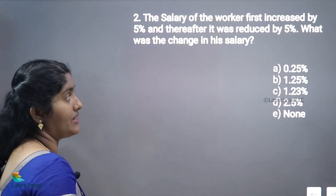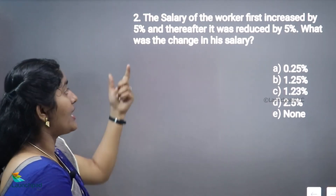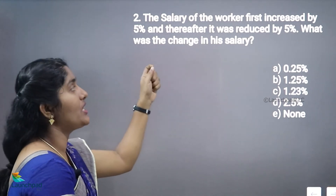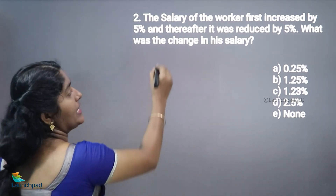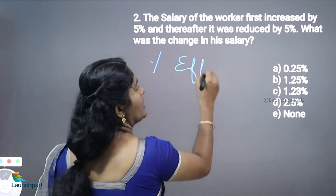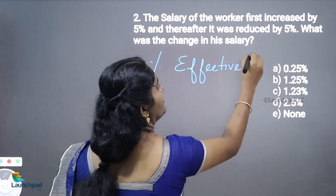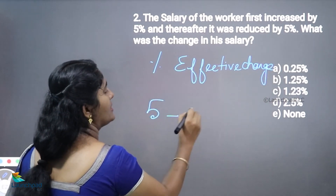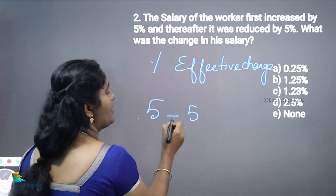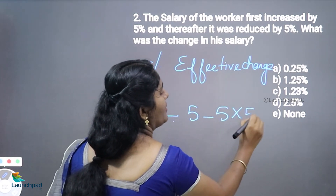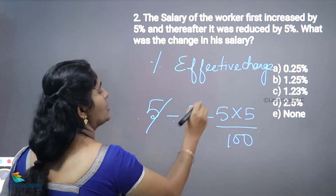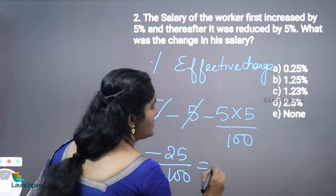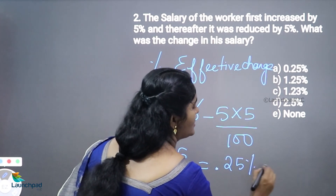The salary of the worker was increased by 5% and thereafter it was reduced by 5%. What was the change in the salary? We can directly calculate the effective change. 5% was increased first, after that 5% will be decreased. So: +5 + (-5) + (5 × -5)/100 = 0 - 25/100 = -0.25 percentage decrement.